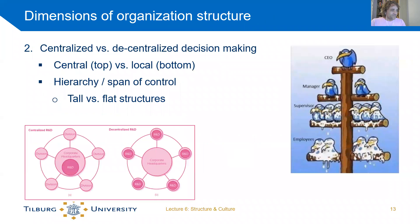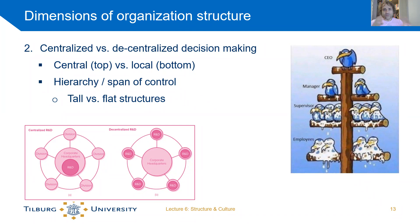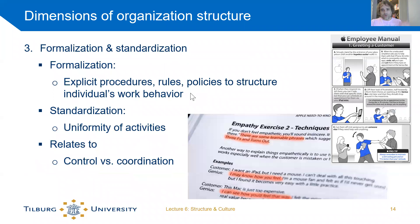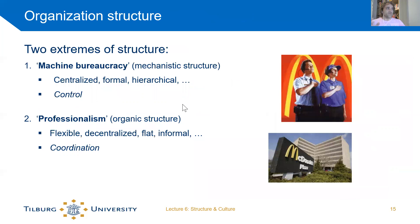An R&D department can be located within the central organization or within different departments. More interestingly, whatever type of organization you have, the R&D department is probably organized bottom-up with coordination rather than control, because that's the way you're most likely able to innovate. Within larger organizations you see different divisions with different structures, but these two archetypes — mechanistic and organic — are useful for analyzing any part of an organization.